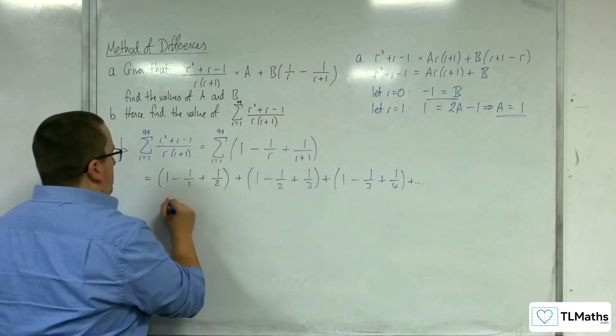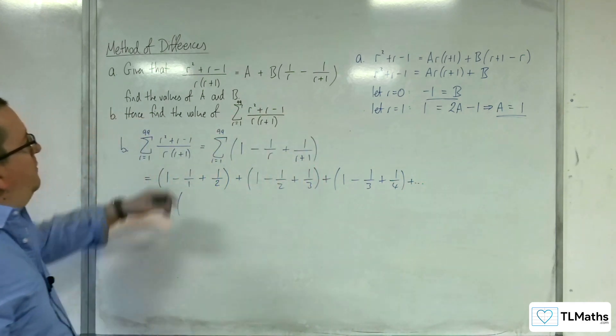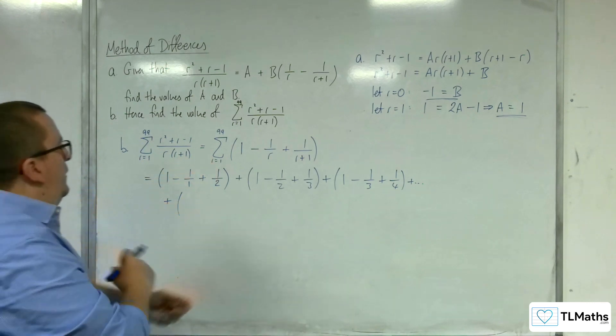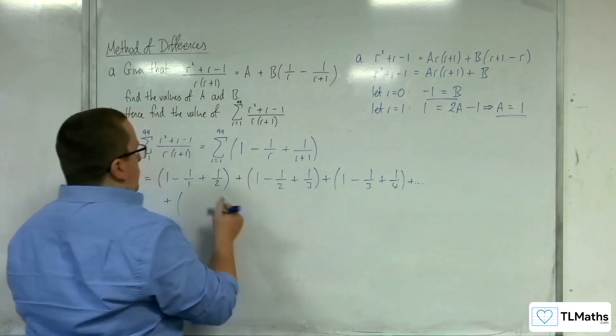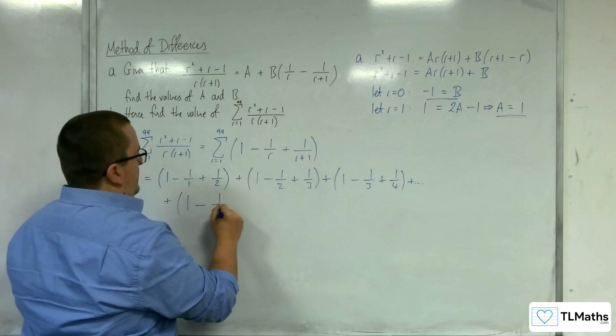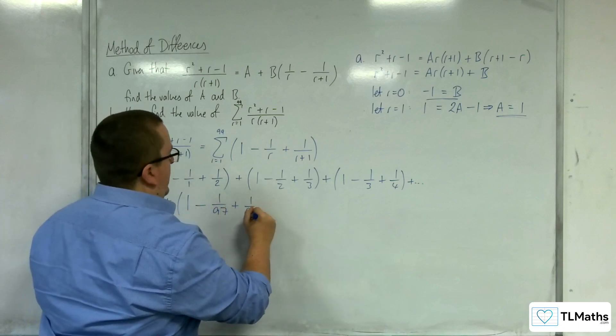And then, because I'm going up to 99 here, so let's substitute in 97, a couple of terms down. So 1 take away 1 over 97 plus 1 over 98.